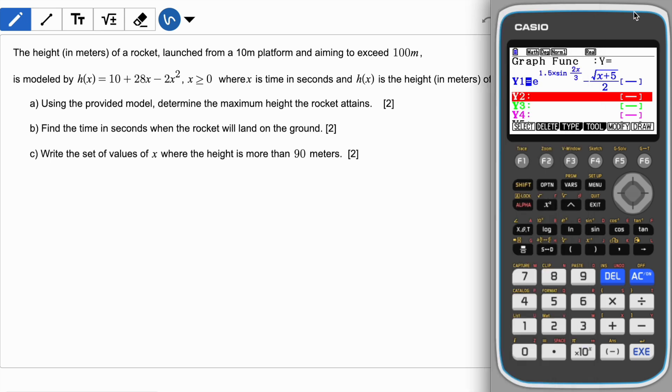I have another function which is of the height of a rocket launched from a 10 meter platform and aiming to exceed 100 meters, and the function is given by a quadratic. Let's enter this function and see what happens. I'm going to delete this and enter this function: 10 plus 28x and minus 2x squared.